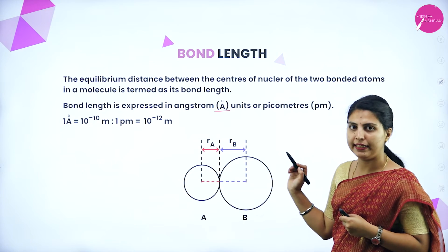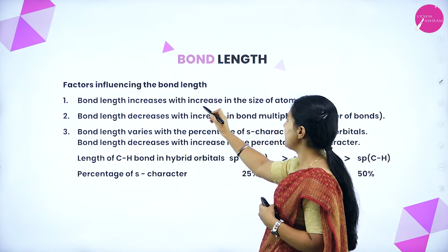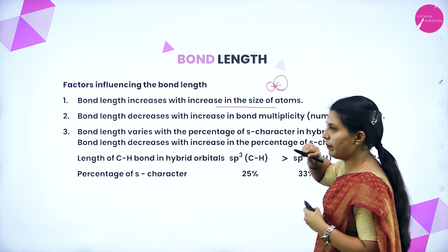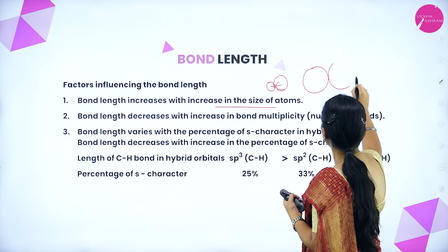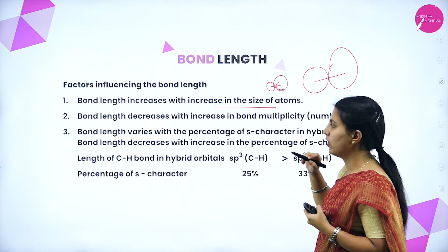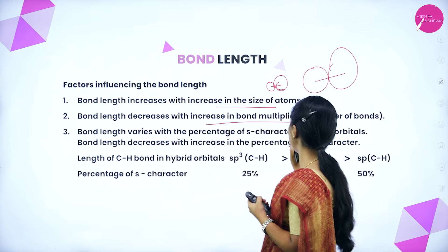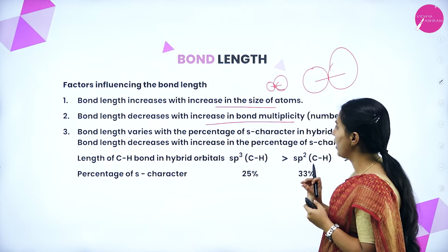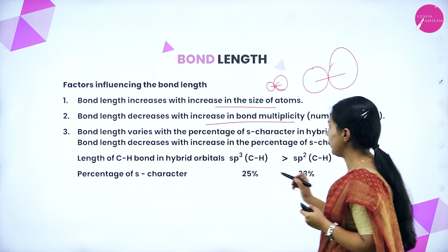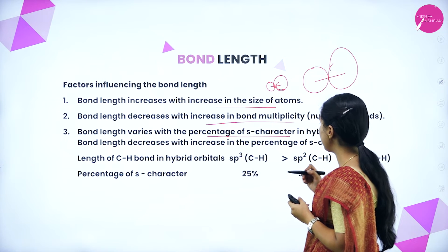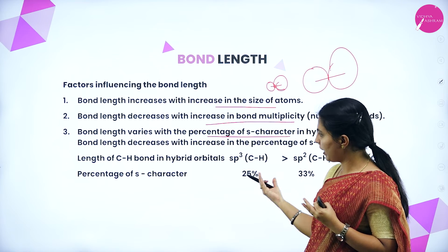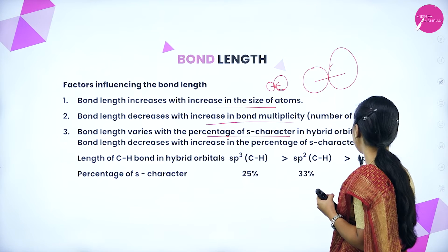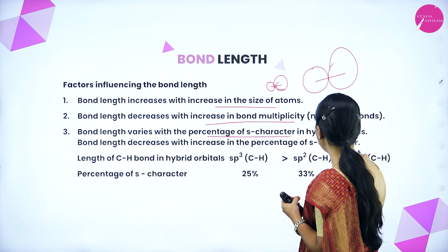Factors influencing bond length: bond length increases with increase in the size of atoms. Bond length decreases with increase in bond multiplicity — single bond is longest, double bond shorter, triple bond shortest. Bond length also varies with the percentage of s character in hybrid orbitals — bond length decreases with increase in s character. SP³ has 25% s character, SP² has 33%, and SP has 50%.